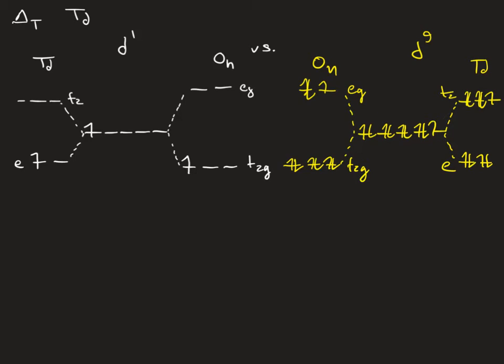The free ion for both the D1 and the D9 are signified by doublet D terms. For the D1 ion, as you increase the octahedral field, this doublet D term splits into a doublet T2G and a doublet EG term.